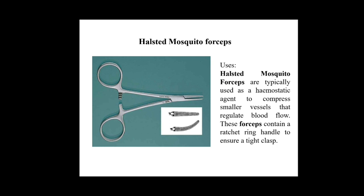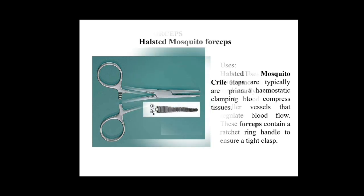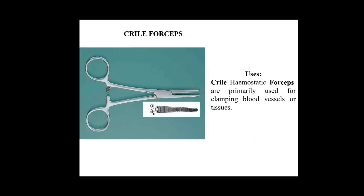The next one is Crile forceps, another type of forceps primarily used for the clamping of blood vessels and tissues. Most forceps are used to clamp or hold tissues. The Crile forceps body is approximately five inches in length.